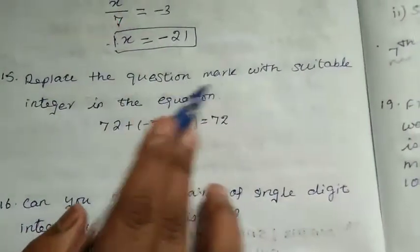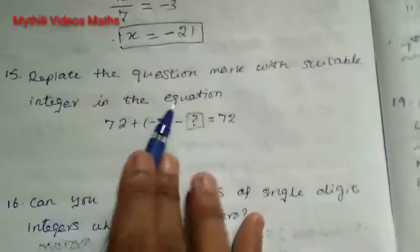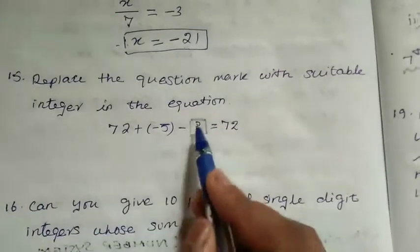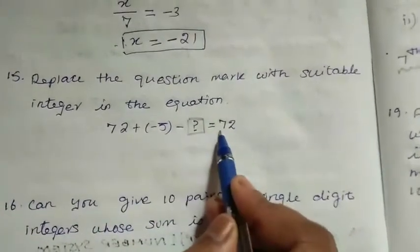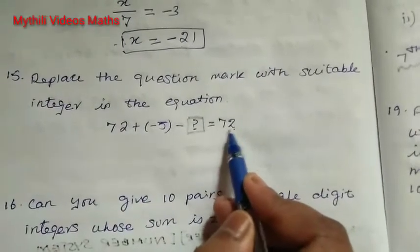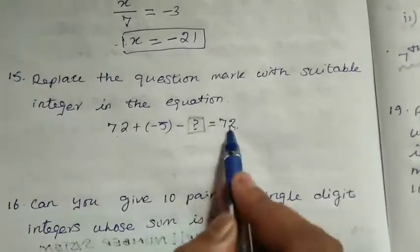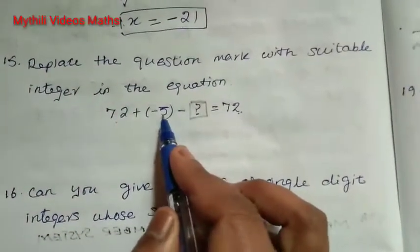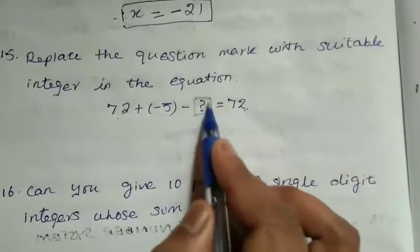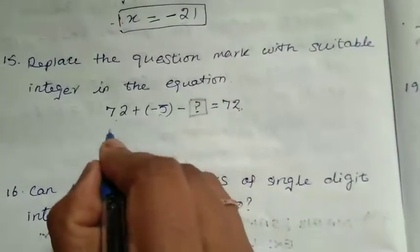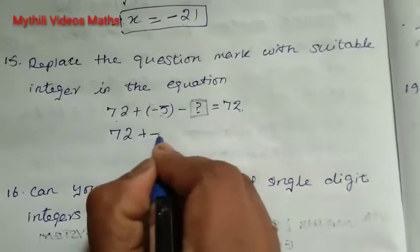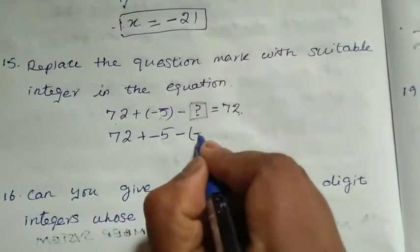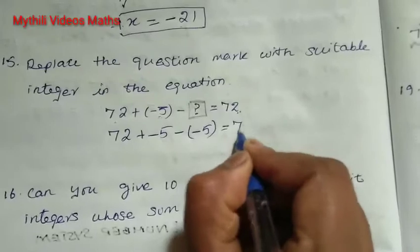15th sum: replace the question mark with a suitable integer in the equation. 72 plus minus 5, minus some box value, equals 72. The right-hand side is 72 and the left-hand side should also be 72. So we check: 72, then minus 5 is there, and we also put minus of minus 5 — that is minus 5 — equal to 72.